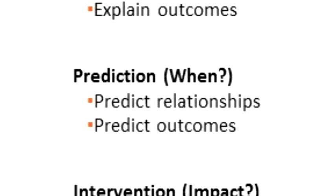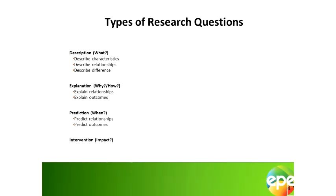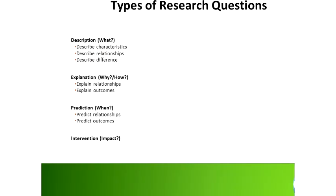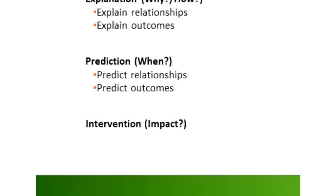When your research study is predictive in nature, you would like to predict when something is likely to happen. Maybe you are interested in understanding what are some of the predictors of job satisfaction — hence you can answer that question — but these variables can predict why an employee is satisfied with his or her job, and then you can predict whether or not that employee is likely to be satisfied.